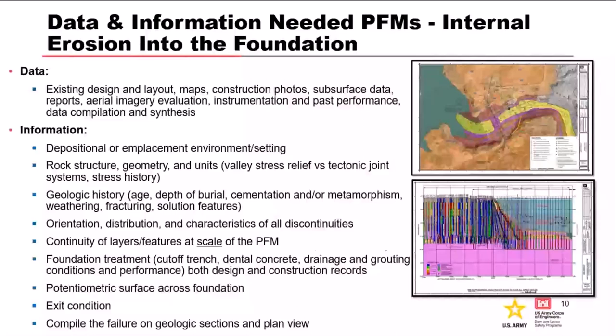The information needed includes emplacement setting, rock structure, geologic history, orientation, distribution, and characteristics of discontinuities — faults, shears, fractures, contacts, old erosional surfaces. Continuity at the scale of the failure mode is important; you may only need a feature a couple of tens of feet wide to accept material and start a piping issue. Also consider potentiometric surfaces and exit conditions.